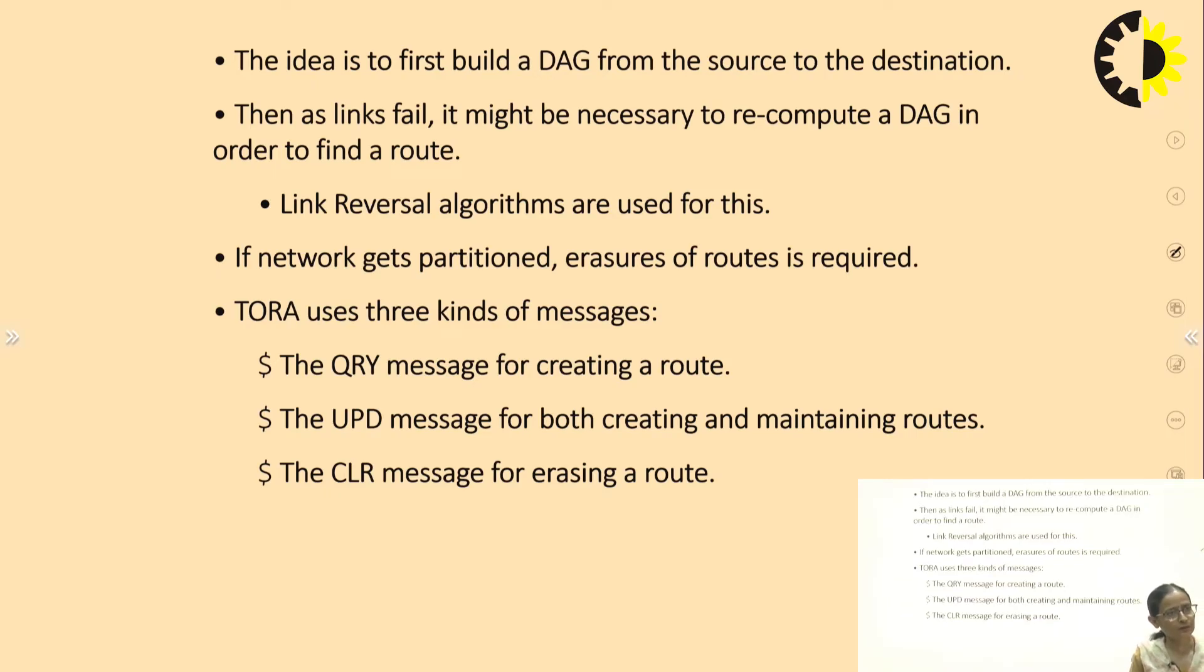For its working, TORA uses three kinds of messages: QRY, UPD and CLR. QRY when it is working for creating a route, UPD message for both creation as well as the maintenance part, and CLR when we need to destroy the route.